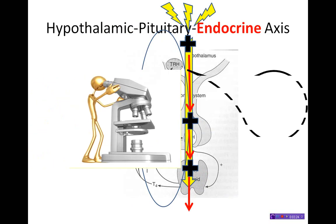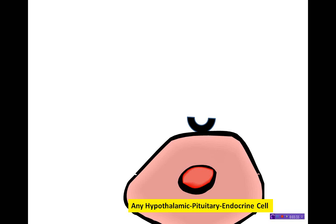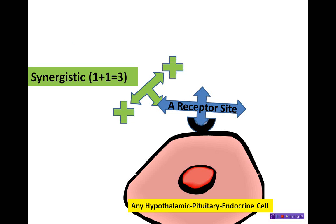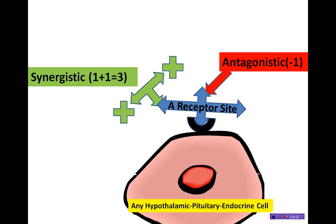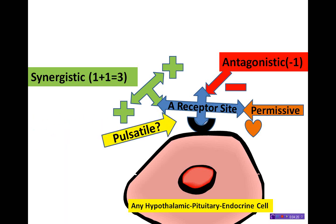Now let's take a closer look at the hypothalamus pituitary axis on a cellular level. This is a generic receptor — a cell along the HP axis, which could be a hypothalamus, pituitary, or endocrine cell. At any given moment at one receptor site, there could be synergism — a synergistic effect of several chemicals, metabolites, hormones, and other molecules. There could be antagonistic effects, permissive effects such as thyroid hormone provides, and also a pulsatile effect that some cells are sensitive to versus a continuous effect of chemicals.